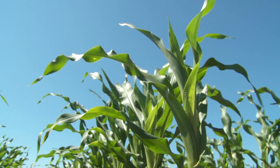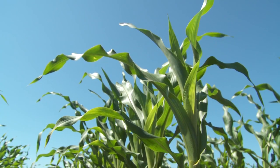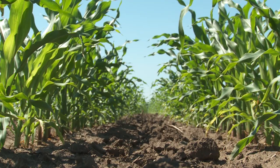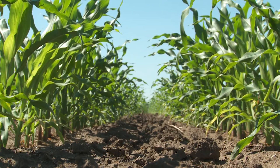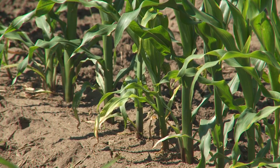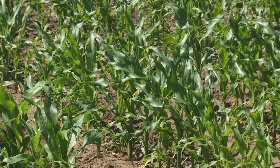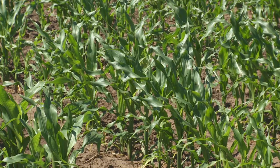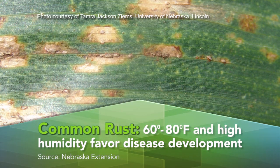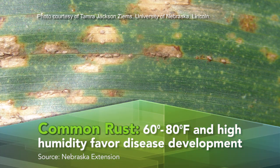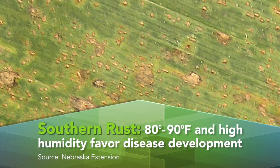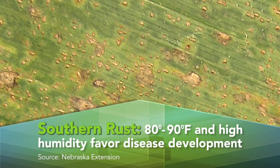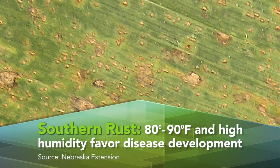For growers, it's good practice to scout the crop throughout the season to monitor for rust that may have developed early. Since rust fungi don't overwinter, they blow in from southern states and progress north as temperatures and humidity rise. Common rust favors temperatures in the upper 60s through the 70s, which is why it is usually seen earlier in the season, while southern rust prefers warmer temperatures in the 80s, posing a problem later in the growing season.